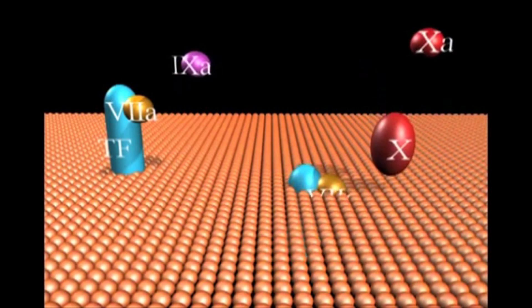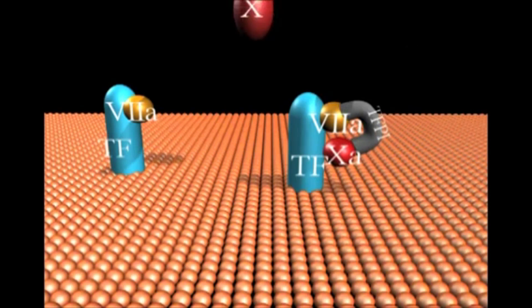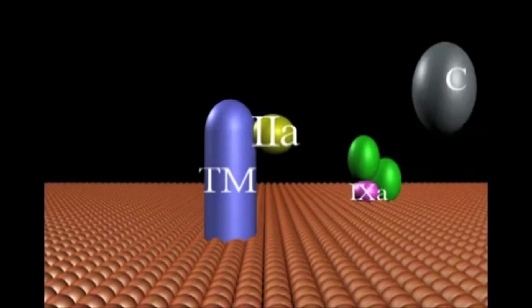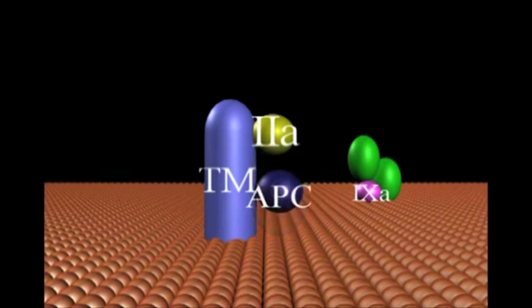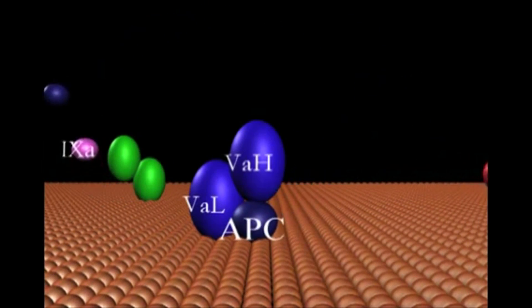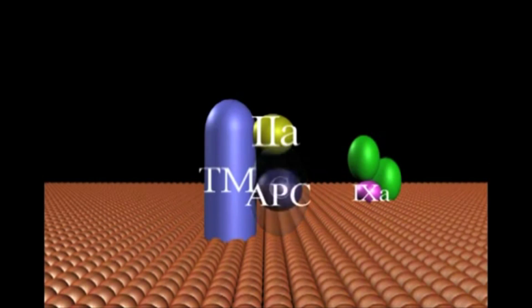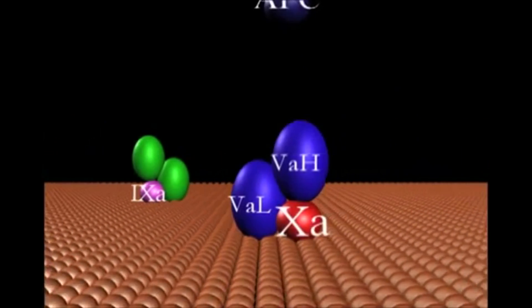TFPI inhibits the tissue factor, factor-7a, factor-10a product complex. Thrombin-2a binds to resident thrombomodulin molecules constitutively present on the vascular endothelial cells. The resulting complex (TM-2a) activates protein C to APC.